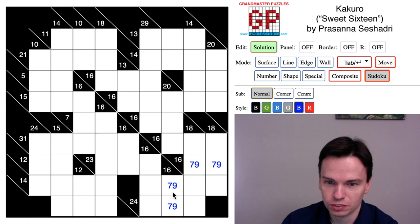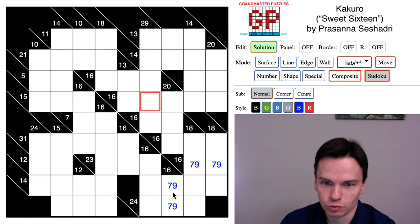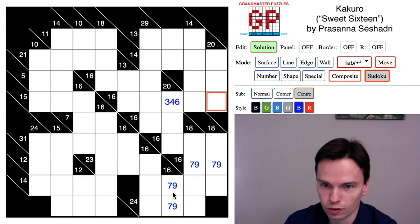So 16 is a forced sum in two ways. When it's just two digits long, it's 7 with 9, and when it's five digits long it's 1, 2, 3, 4, 6.